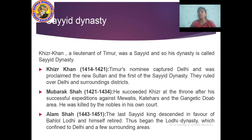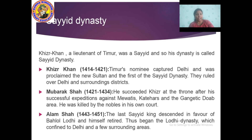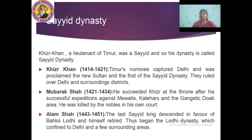Alam Shah ruled from 1443 to 1451. He was the last Sayyid king and descended the throne in favor of Bahlul Lodi and retired himself. Thus began the Lodi dynasty, which was confined to Delhi and a few surrounding areas. In the Sayyid dynasty the rulers were Khizr Khan, Mubarak Shah, and finally Alam Shah. After Alam Shah, Bahlul Lodi came and established the Lodi dynasty.